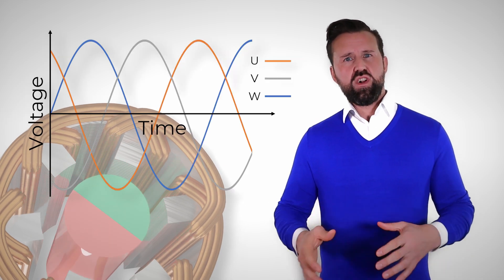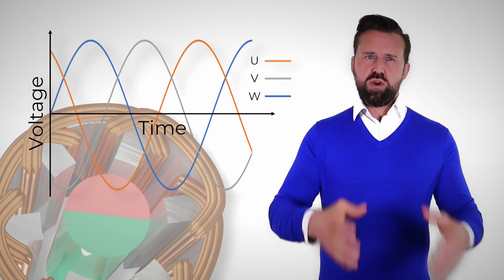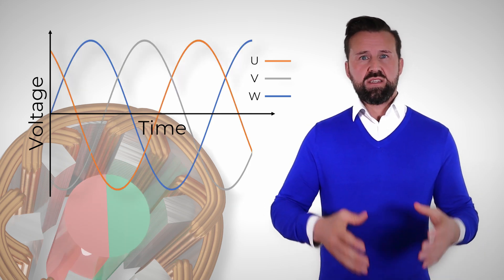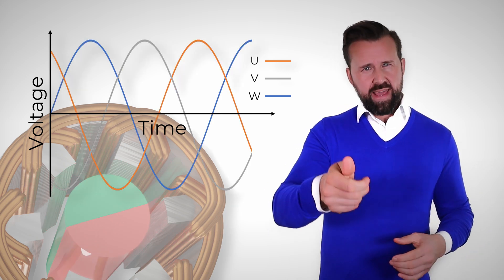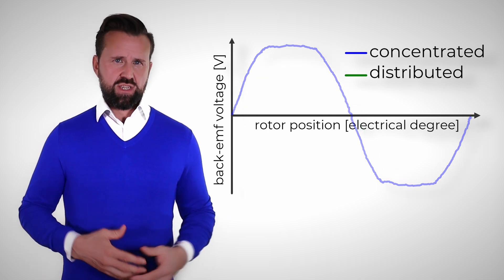Let's take a look at the back EMF of a distributed winding and a concentrated winding. The back EMF is the voltage that you can measure at the terminals of an electric motor with permanent magnets when the motor is rotated fast enough by hand. As you can see, the voltage of the electric motor with the distributed winding is nicely sine-shaped.